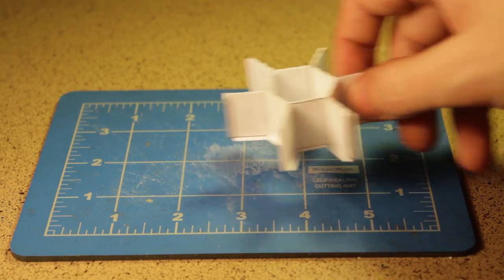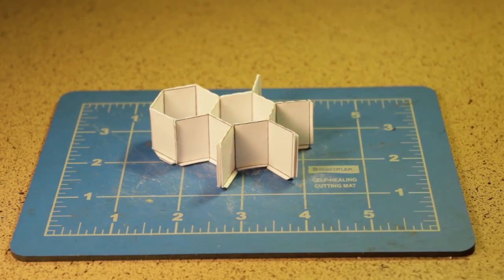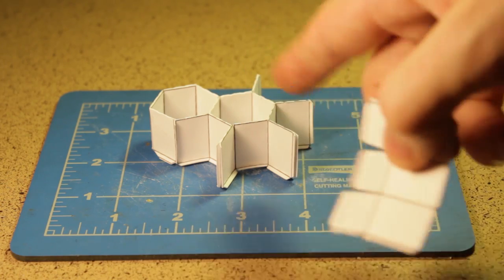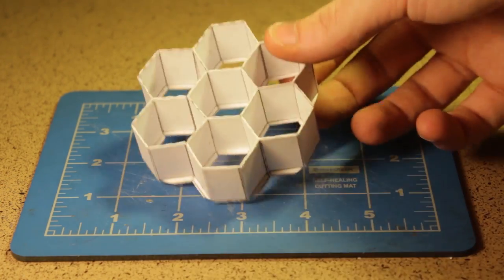You can see what it looks like with one attached. Cut the other five, put them all on, and you end up with something like this.